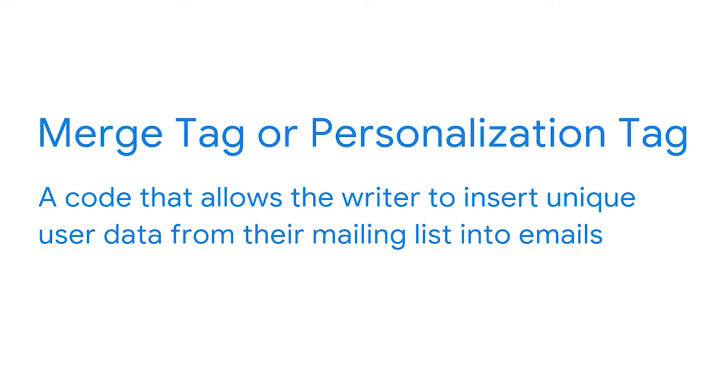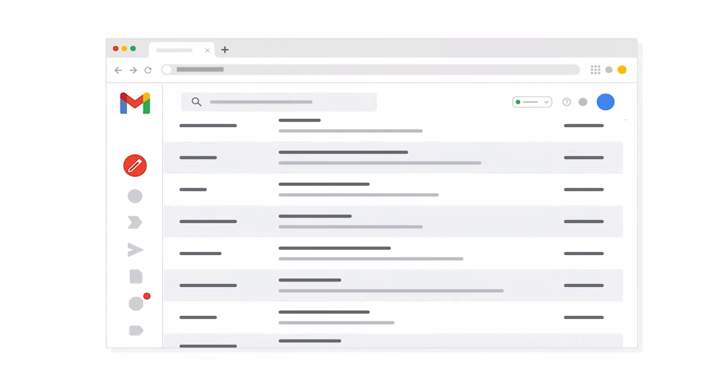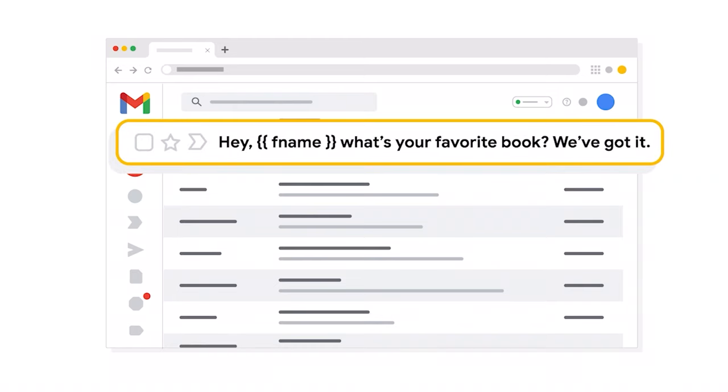The only time you aren't referring to your audience as you, your, or yours is when you are using their name. Email marketing automation tools allow you to use merge tags or personalization tags to make emails as personal as possible. A merge tag is a code that allows the writer to insert unique user data from their mailing list into emails. Sometimes it's as simple as typing two curly brackets, F name, and two more curly brackets to prompt the program to include the reader's first name. So you might type "Hey {{F name}}, what's your favorite book? We've got it." And if your reader was named Angelique, she would see "Hey Angelique, what's your favorite book? We've got it."